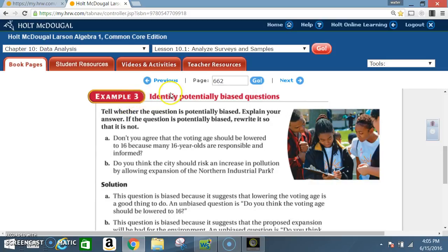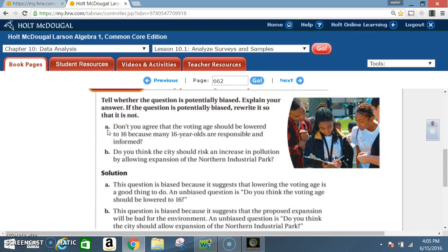Example 3: Identify potentially biased questions. Tell whether the question is potentially biased. Explain your answer. If the question is potentially biased, rewrite it so that it is not. Question A: Don't you agree that the voting age should be lowered to 16 because many 16-year-olds are responsible and informed?